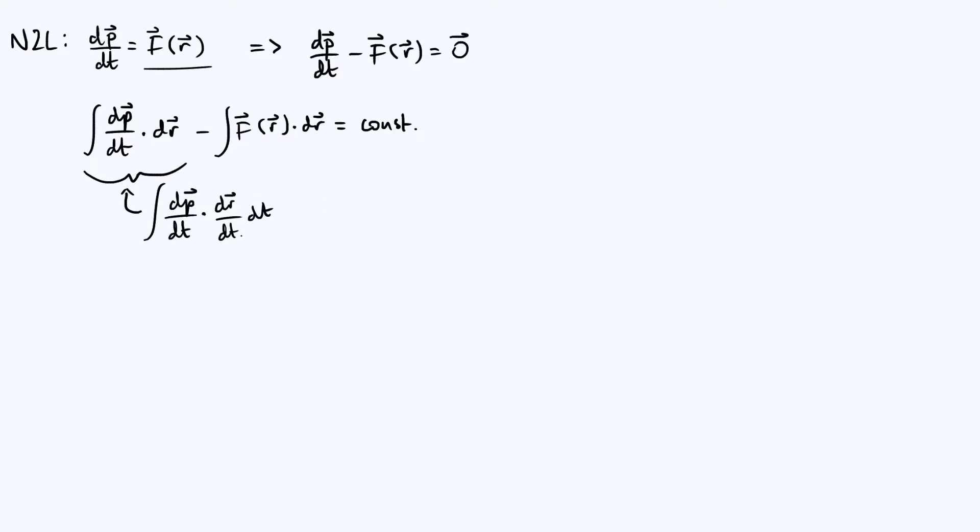You can basically think of the dt's as canceling, but then by definition dr/dt is the velocity of our particle, that's just v. So we've got that this is the integral of dp/dt dotted with the velocity, with respect to time.